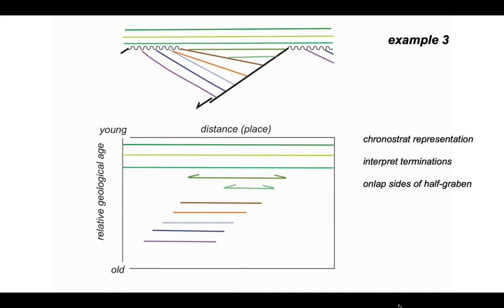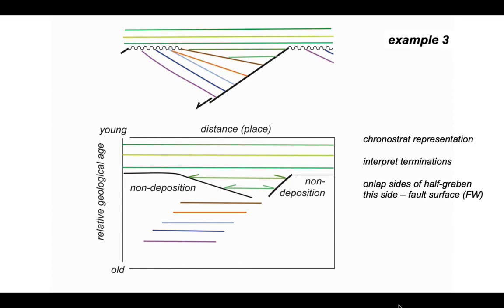Now let's interpret. The two green horizons of limited extent onlap the tilted brown strata and the fault plane. To the left, towards the left-hand fault block, there was non-deposition beyond the point of onlap. Against the fault scarp there was onlap onto the fault scarp. Therefore, at the geological time those strata were deposited, further to the right they were not deposited — there was non-deposition.